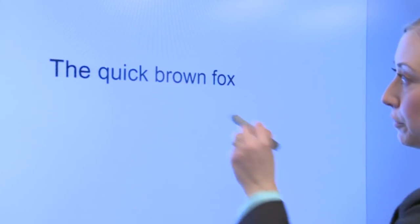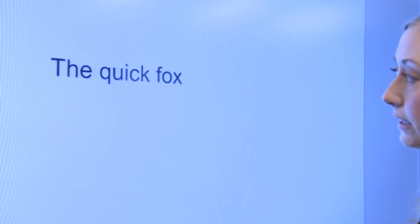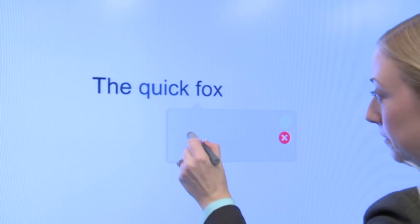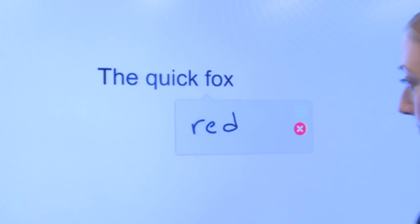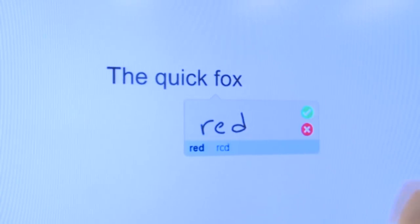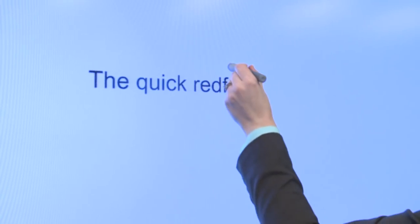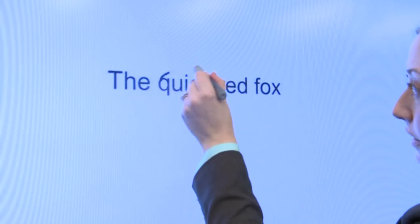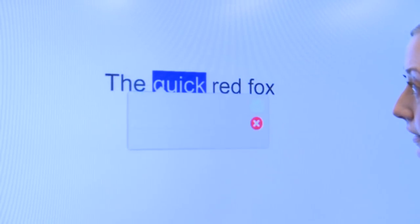And now I can use a strikethrough to delete a word. I can use a caret to insert a word. I can use a vertical line to insert a space. And I can also use a circle to replace a word or letters in a word.